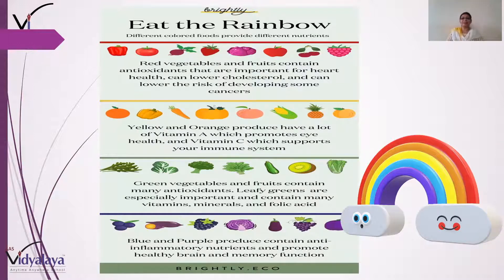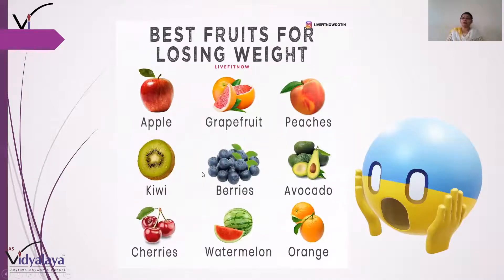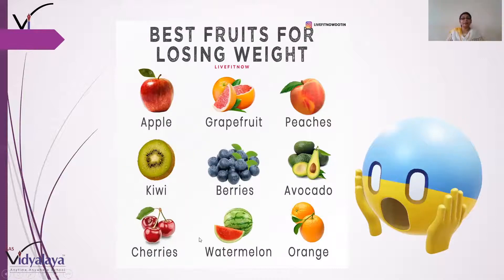Toh thi na mazedaar si jaankari! Ab dekhiye kuch bade hi interesting facts hain — best fruits for losing weight. Kya aapne kabhi socha hai ki phal khane se humara weight bhi lose ho sakta hai? Agar aapke ghar mein kisi ka wazan zyada hai, toh unko apple, grapefruit, peaches, kiwi, berries, avocado, cherries, watermelon, orange — ye saare phal khane chahiye. Agar ye phal daily basis pe khaayenge toh aapka weight bhi kam hoga, weight lose hoga.